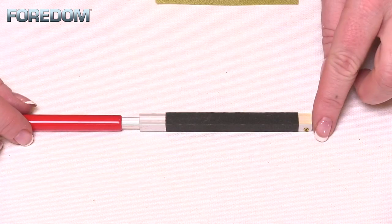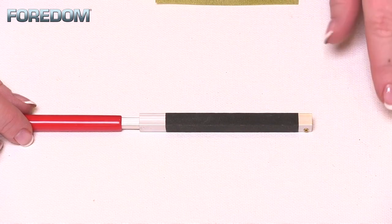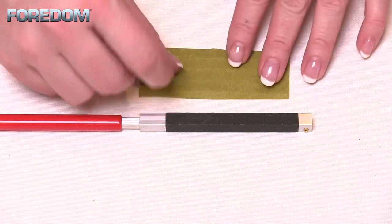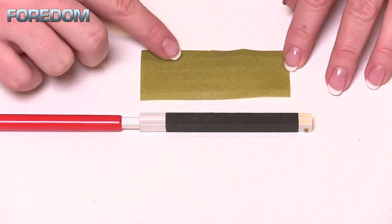When you first receive your sanding holders, they will have a piece of sandpaper on them. You can use that as a guide for cutting others, or you can just measure out a one and a half inch by three and a half inch piece.